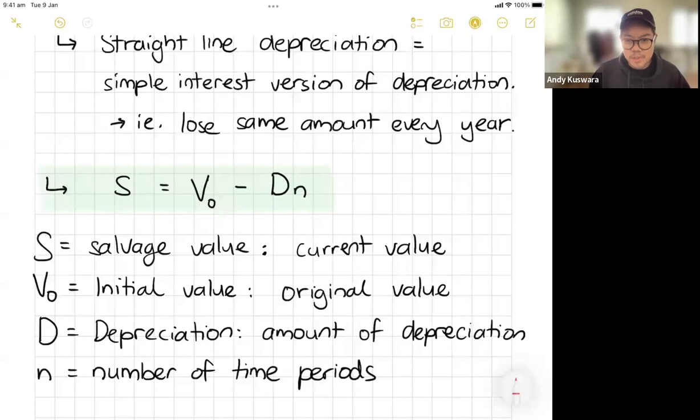D is probably the easy one. Stands for depreciation. So you're going to lose a certain amount every time period. That's your capital D. And then N is probably the familiar one. That's going to be a number of time periods.